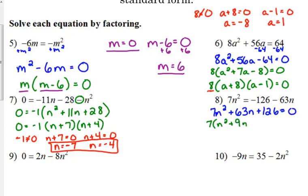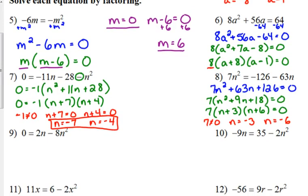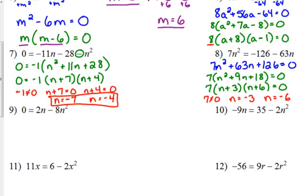So we have a GCF of 7. 3 and 6: 3 times 6 is 18, 3 plus 6 is 9. So again, the GCF cannot equal zero. Just for the sake of space, I'm going to go ahead and solve those two for n. So negative 3 and negative 6 are our solutions.